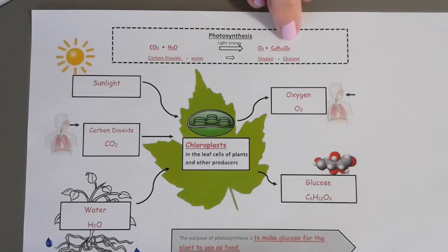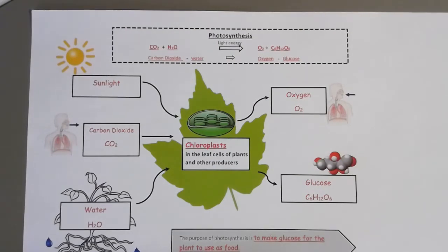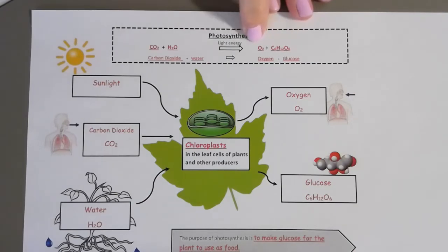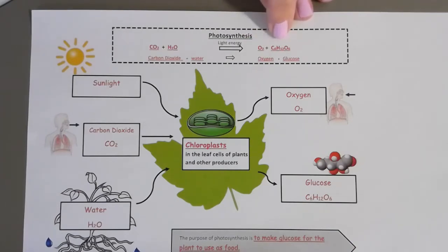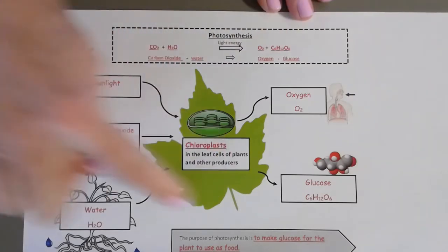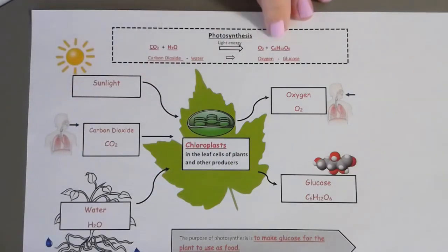Plants will break down this sugar to get energy, but that happens through a different process — cellular respiration. Photosynthesis is important for two reasons: it creates food for the plant, and it creates oxygen. We need oxygen to breathe, and we need this glucose as food because we, as animals, eat plants and break down that energy.